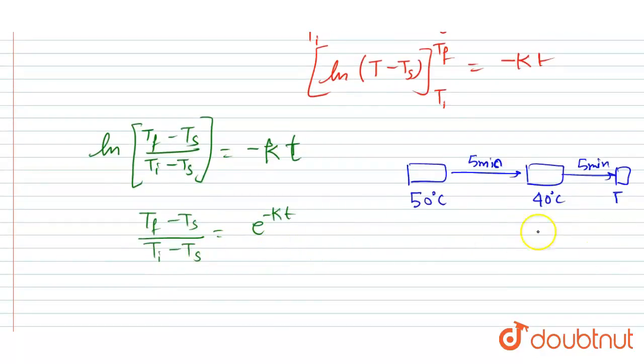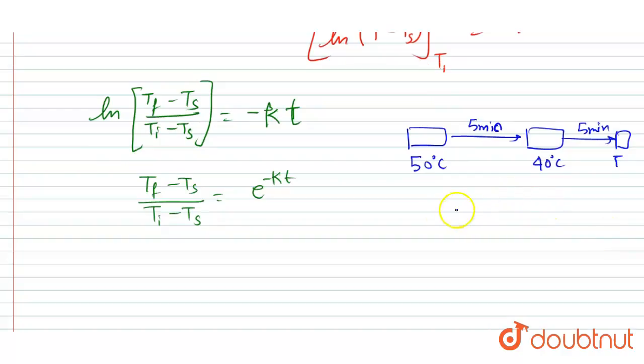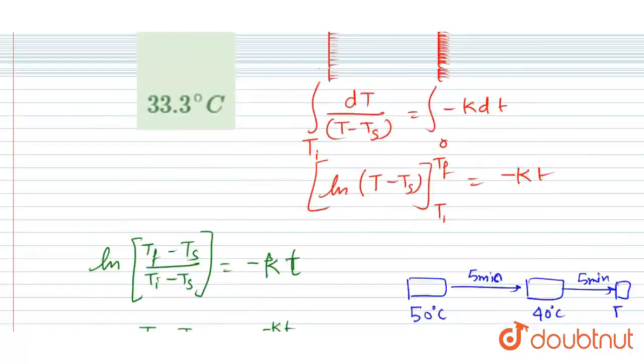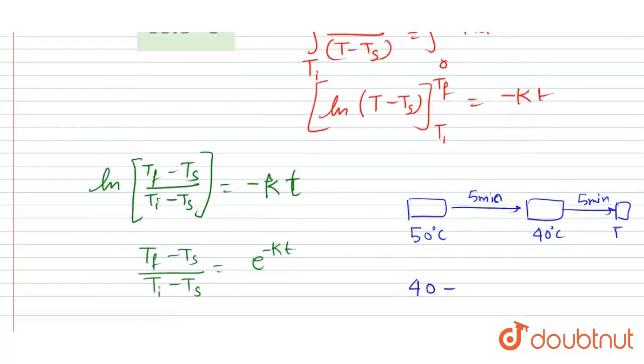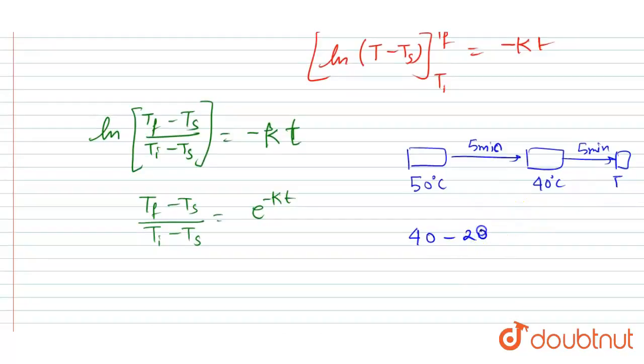So if you apply this formula for these two, you will write here the T final is this. So you will write 40 minus surrounding temperature. The surrounding temperature is given in the equation as 20, so 40 minus 20